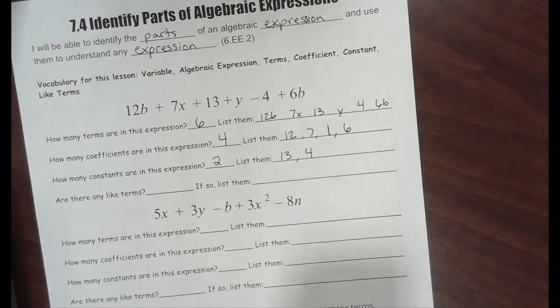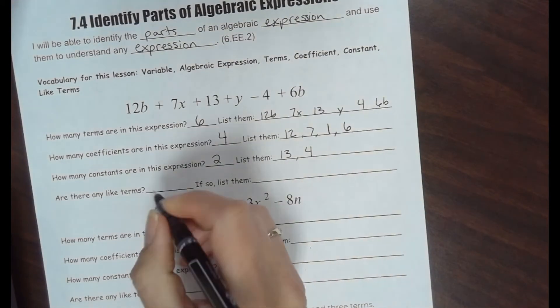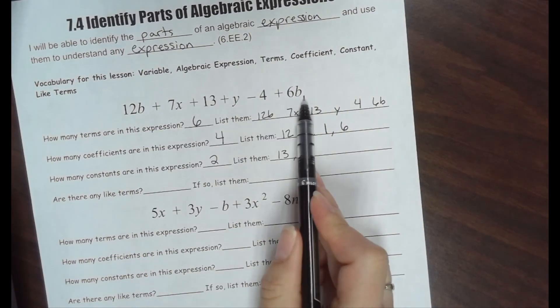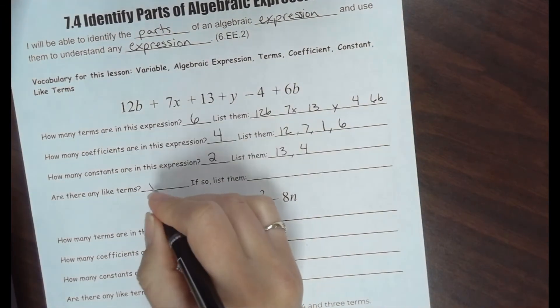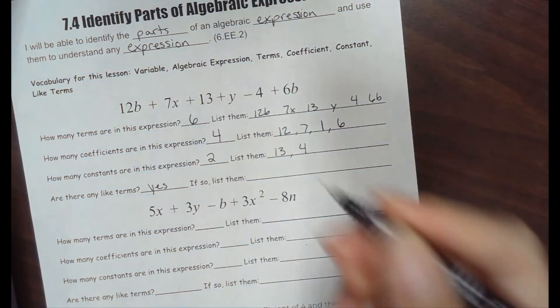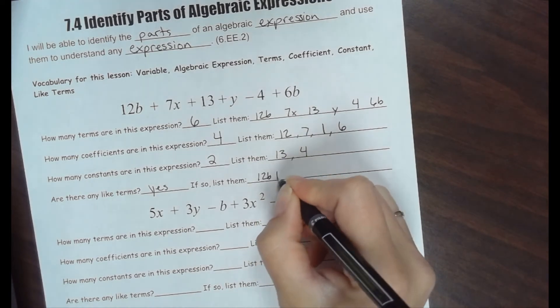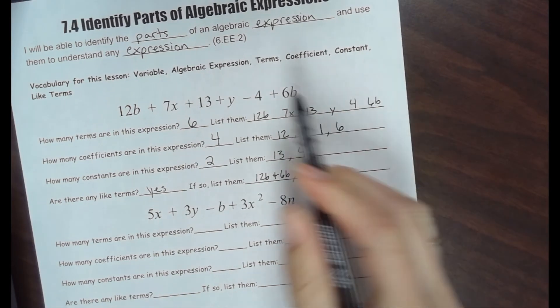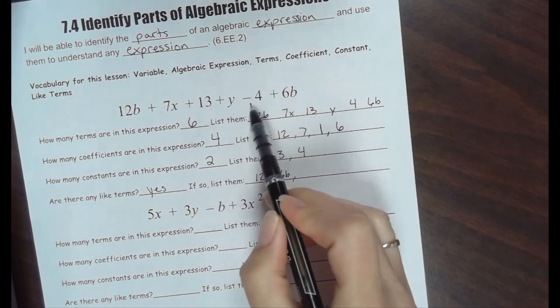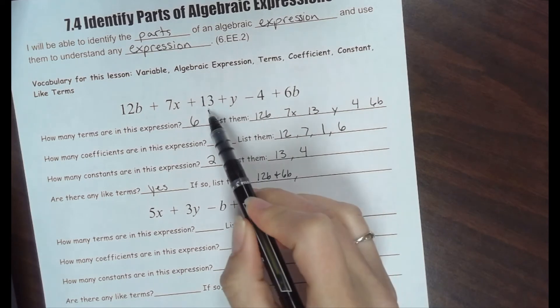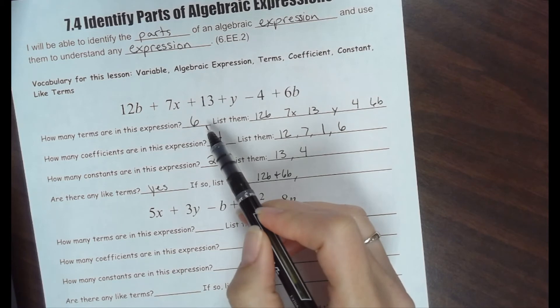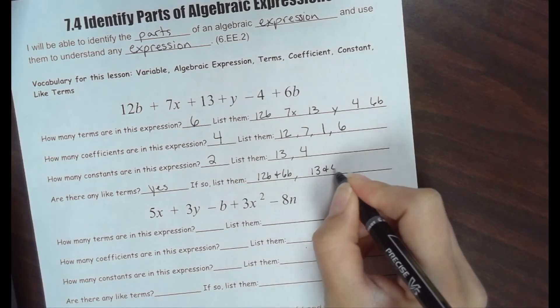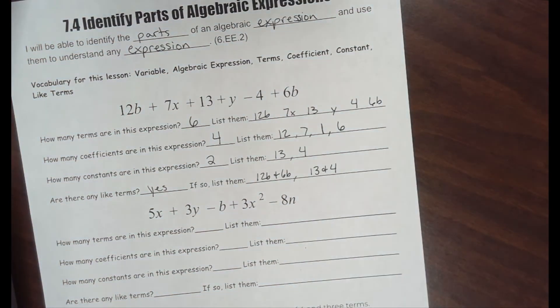Are there any like terms? If so, list them. Like terms mean they have the same exact variable. I see 12b and 6b. So yes, there are like terms. We have 12b and 6b. We also have 13 and 4. Why are these like terms? They have the same variable. What variable do they have? No variable. So both constants are also like terms.